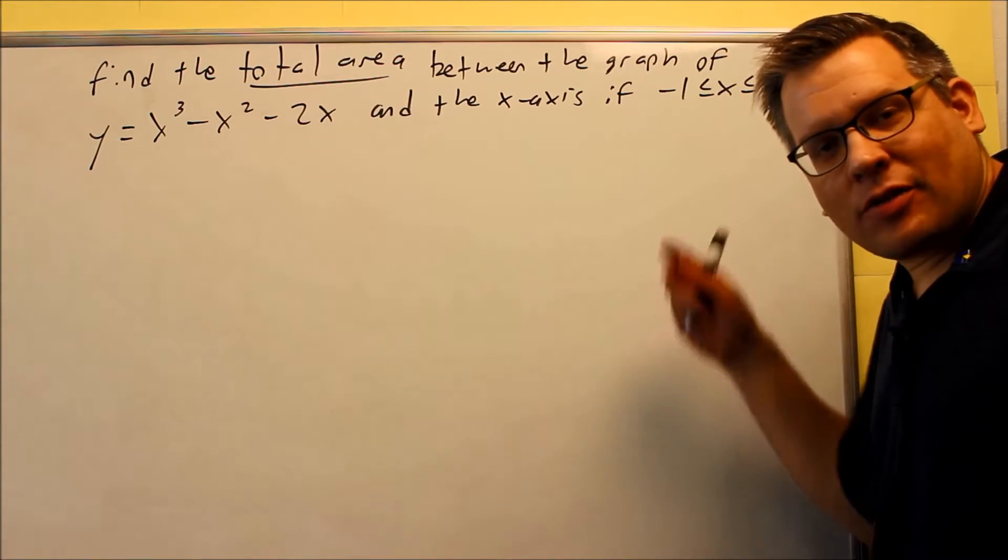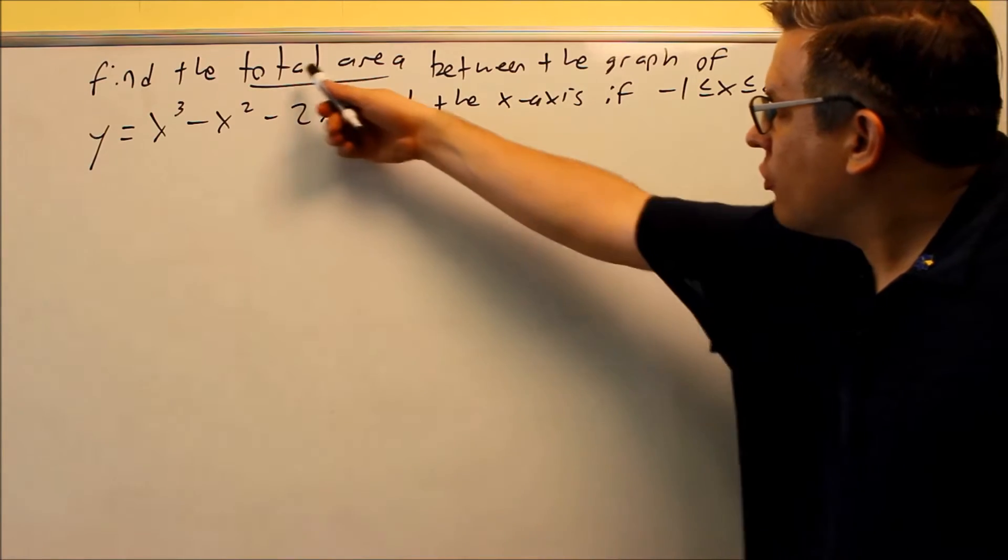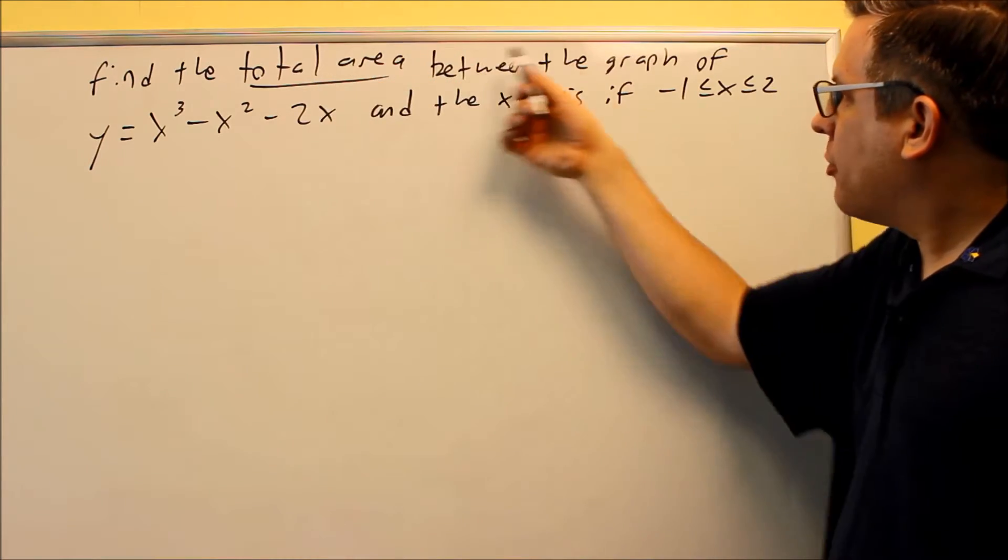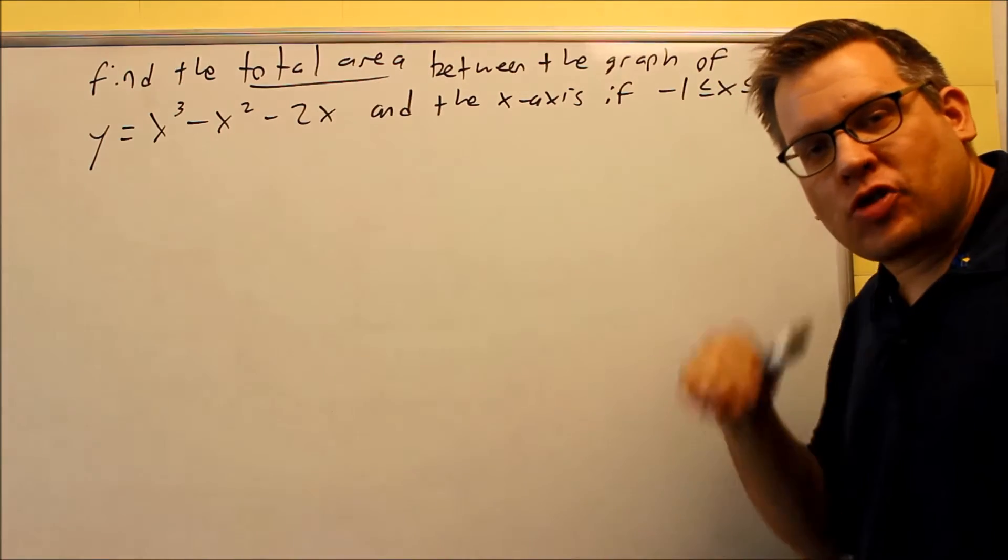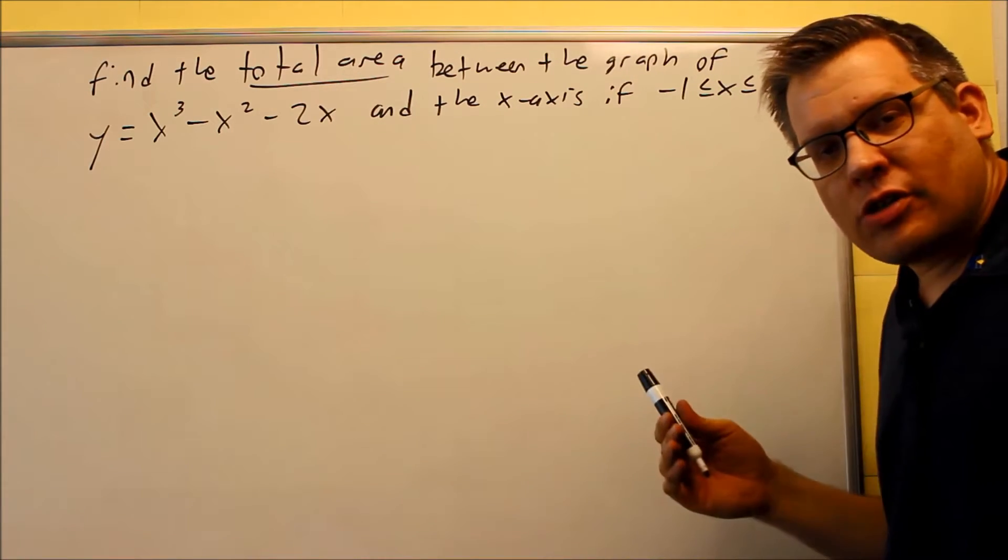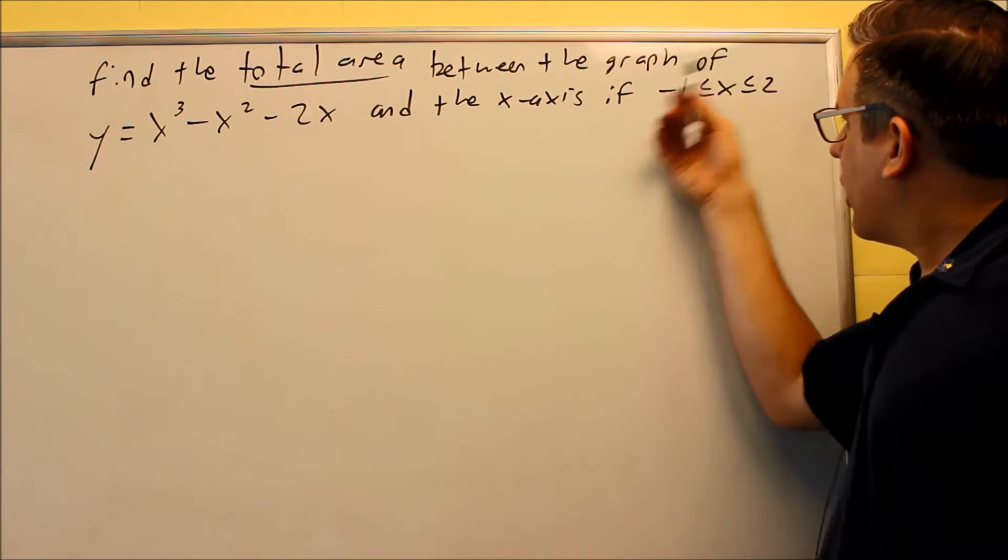So in the previous video, I talked about the three steps that you've got to do if you see a problem written this way: the total area between a graph and the x-axis. So if you see that word total area, special procedure we have to follow. The first procedure is we need to know how to break up this interval.